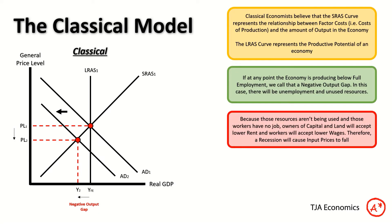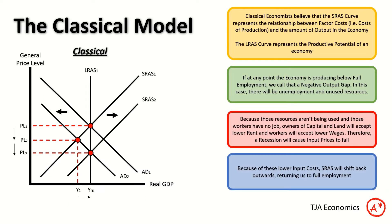The important thing is that we've effectively got a recession — a negative output gap. The classical assumption is that because workers have no jobs, factories aren't being used, and tractors aren't being used, the owners of those resources — workers who own the labour, landlords who own the buildings — will all accept lower prices. As a result, input prices across the economy fall, SRAS shifts back outwards, and the economy returns to full employment. This requires no government intervention — it happens on its own, because input prices are infinitely flexible in the classical model.